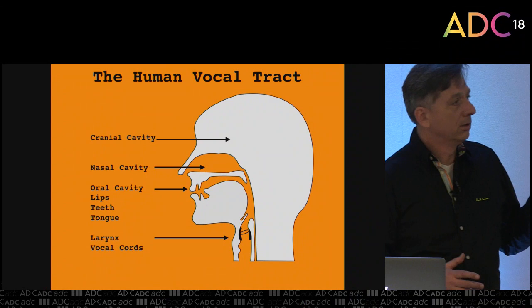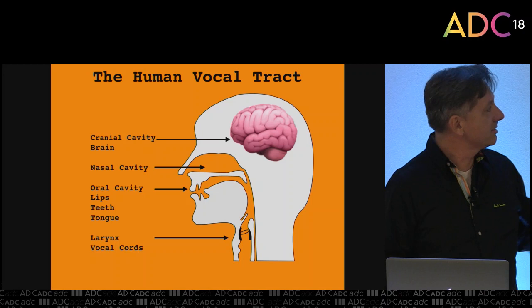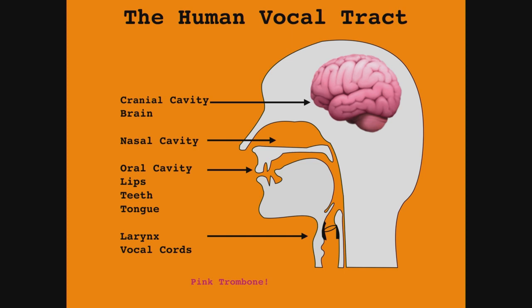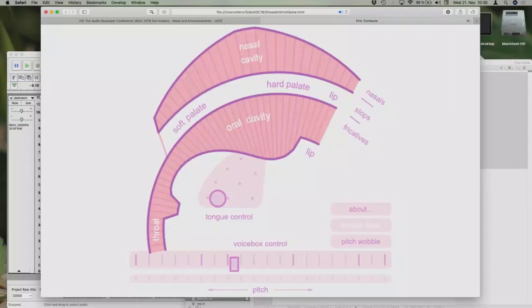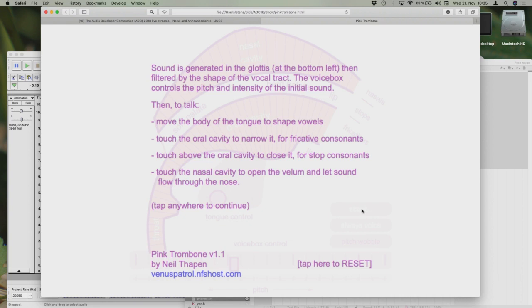There's another cavity whose acoustic properties matter — and that's the brain, which of course controls everything. Now I want to show the Pink Trombone — maybe some of you already saw it. A guy named Nick Thapen put it online. It's a functioning model of the vocal tract where you can move the tongue and several other things.